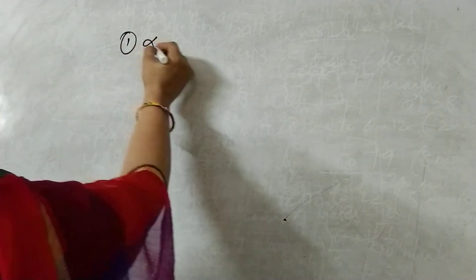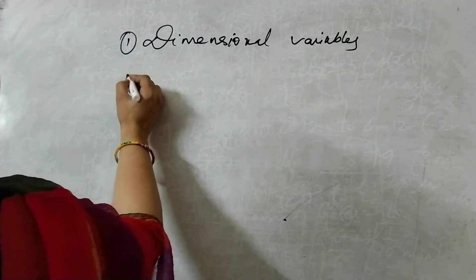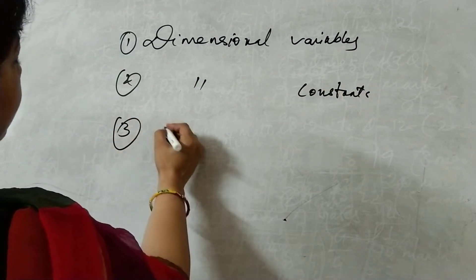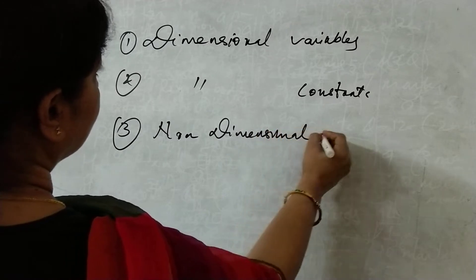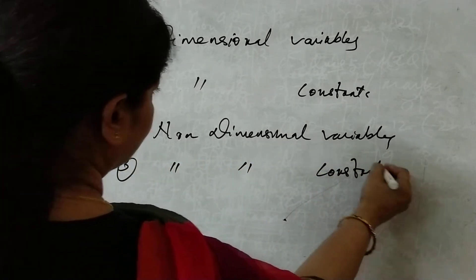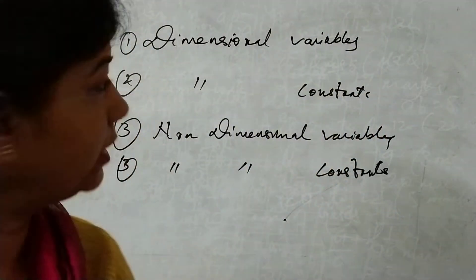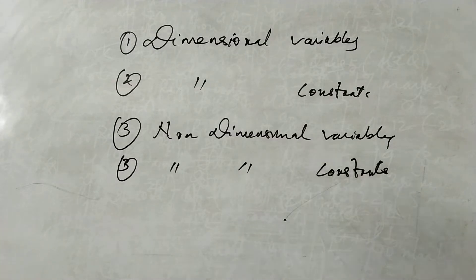The first one is dimensional variables, the second one is dimensional constants, the third one is non-dimensional variables, and the fourth is non-dimensional constants. Let me just give an example so that you understand.